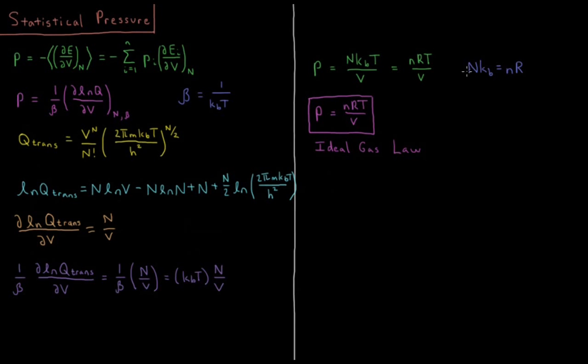Notice that number of particles times the Boltzmann constant is equal to number of moles times the gas constant. So NKT over V is equal to NRT over V. Note that the pressure of a system of N particles that are non-interacting is equal to NRT over V. This is, in fact, the ideal gas law.